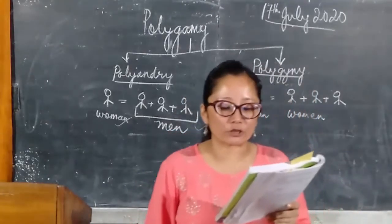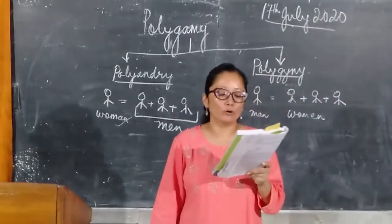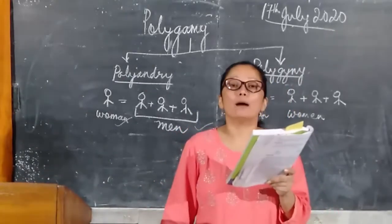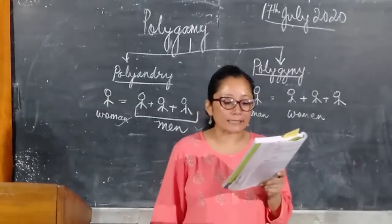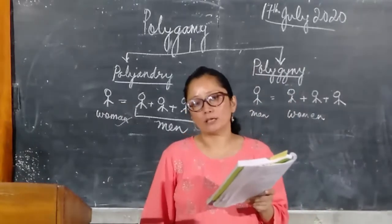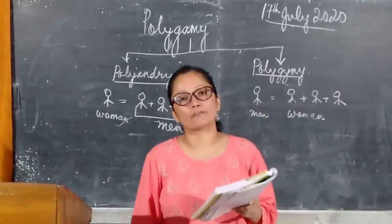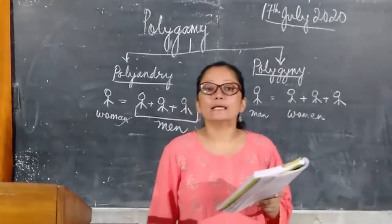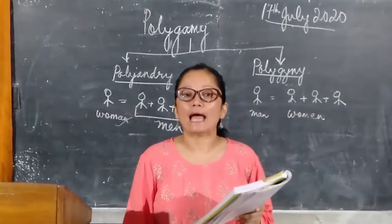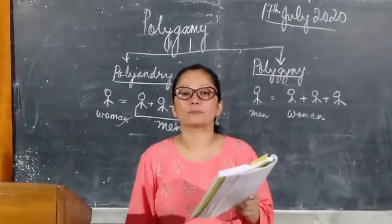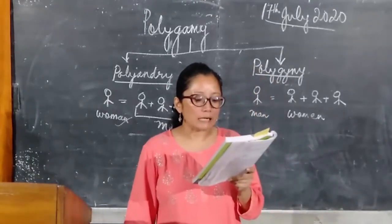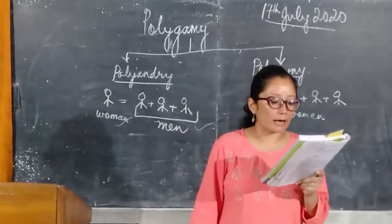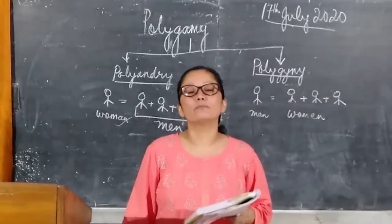Polyandry is found among the Wahuma tribes of East Africa, and in India among the Kotas, Todas, Khasas, Gaddi, and Naga tribes. Among the Wahuma, when a man buys a wife he is assisted by his brothers and they share marital rights until the woman's pregnancy, when rights become exclusive. Among the Khasas, the elder brother marries a woman and she automatically becomes the wife of all the brothers — even a brother born afterwards will be regarded as sharing his elder brother's rights.